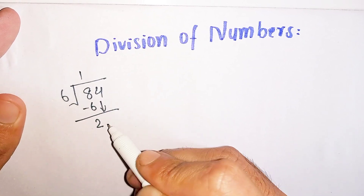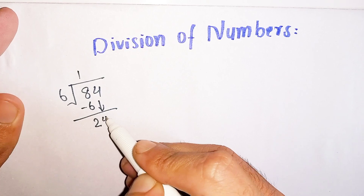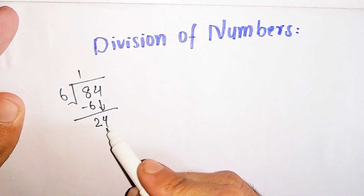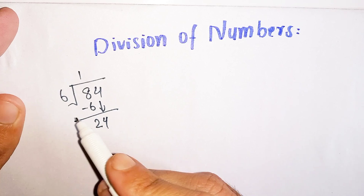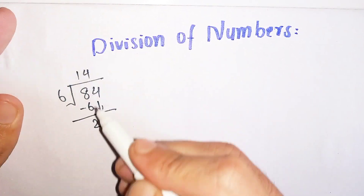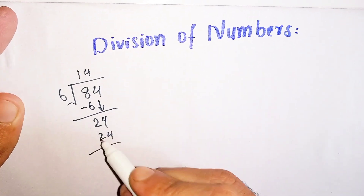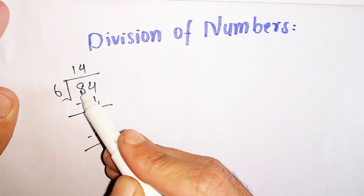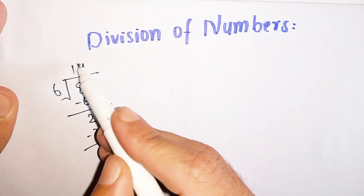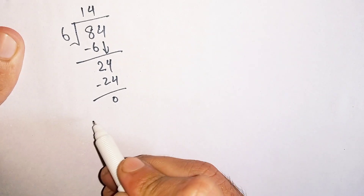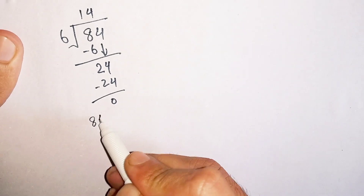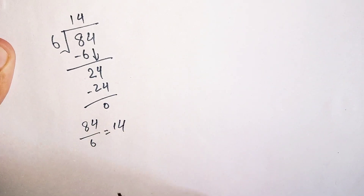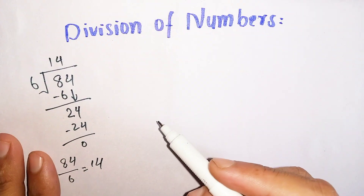will bring down the 4 near 2, which becomes 24. Now how many times does 6 go into 24? 6 times 4 is 24. Subtract 24 from 24, the remainder is 0. So we can say that 84 divided by 6 is equal to 14.